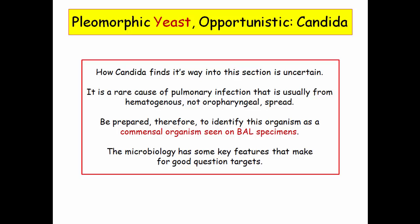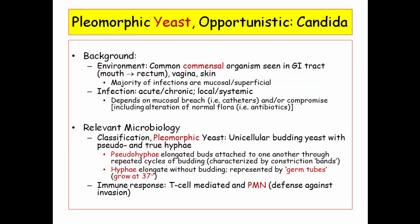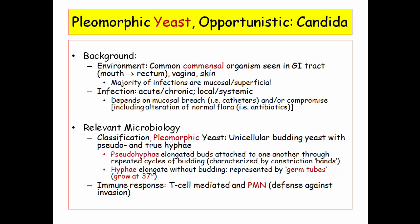The microbiology has some key features that make for good test questions. First, candida is described as pleomorphic — pleomorphic describes the ability to bud, form pseudohyphae, and true hyphae, and the NBME has fun with these several different forms. It is a common commensal organism in the GI tract, vagina, and skin, where it causes mucosal infections. Invasive infections generally require immunosuppression.